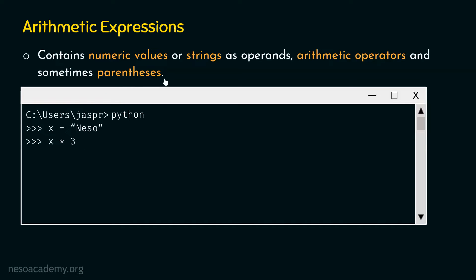An arithmetic expression can have parentheses also. Parentheses are mostly needed when we have more than one operator in an expression and we need to decide which operation should be performed first. Here we just have one operator, the multiplication operator, so there is no need for parentheses. X into three will evaluate down to some value, so it is an arithmetic expression. If we multiply Nesso three times, we will get Nesso Nesso Nesso as a result.